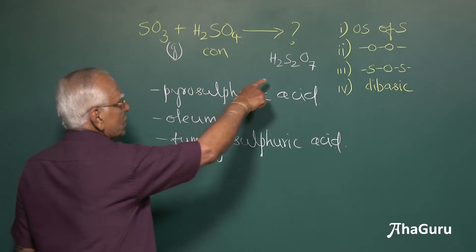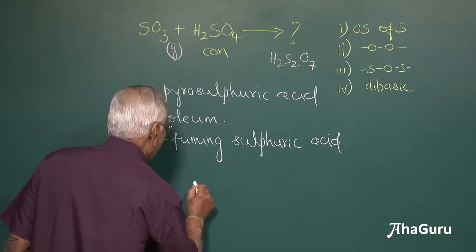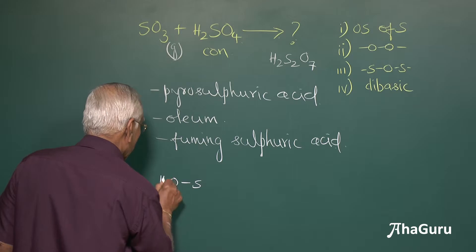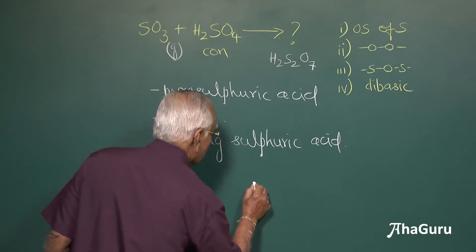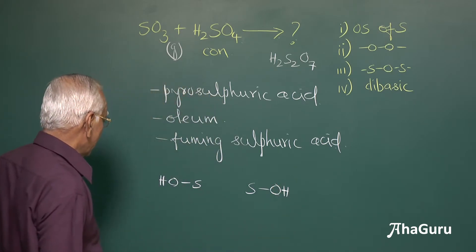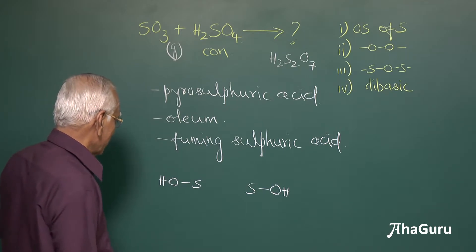Now let us look at the structure of pyrosulfuric acid. The structure of pyrosulfuric acid, it is a dibasic acid therefore it has got 2 OH groups. So let me account for 2 sulfur atoms and 2 OH groups and the presence of 2 OH groups are responsible for a dibasic nature.